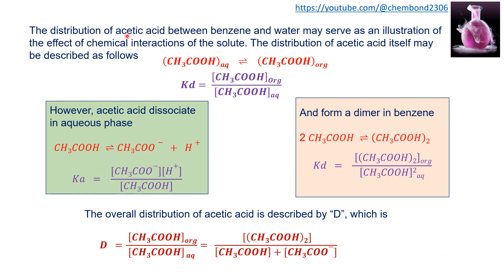Acetic acid and its distribution between the organic phase (benzene) and aqueous phase (water) will be used for better understanding of the distribution ratio. The distribution of acetic acid itself may be described as acetic acid in aqueous phase in equilibrium with acetic acid in organic phase. The KD value is written as concentration of acetic acid in organic phase divided by concentration of acetic acid in aqueous phase. However, acetic acid dissociates in aqueous phase, producing acetate anion plus hydrogen ion.